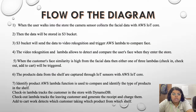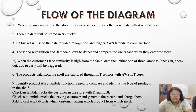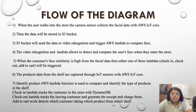For the flow diagram, when the user walks into the store, the camera sensor collects the patient data with AWS IoT Core. Then the data will be stored in S3 Bucket. S3 Bucket will send the data to video recognition and trigger AWS Lambda to compare face. The video recognition and Lambda allow detection and comparison of the user's face when they enter the store. When the customer's face confidence is high, the facial data triggers one of the three Lambda functions.